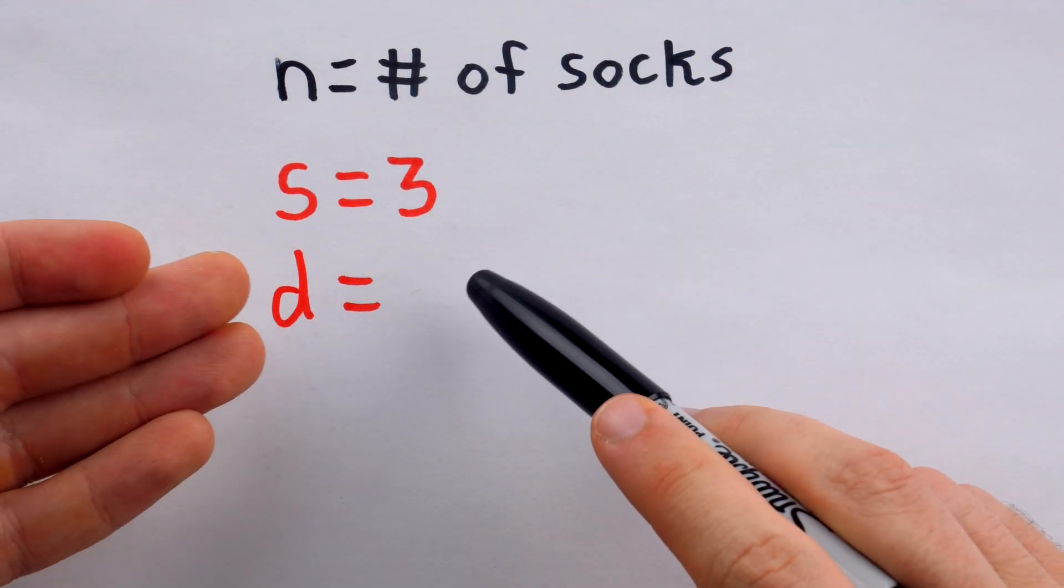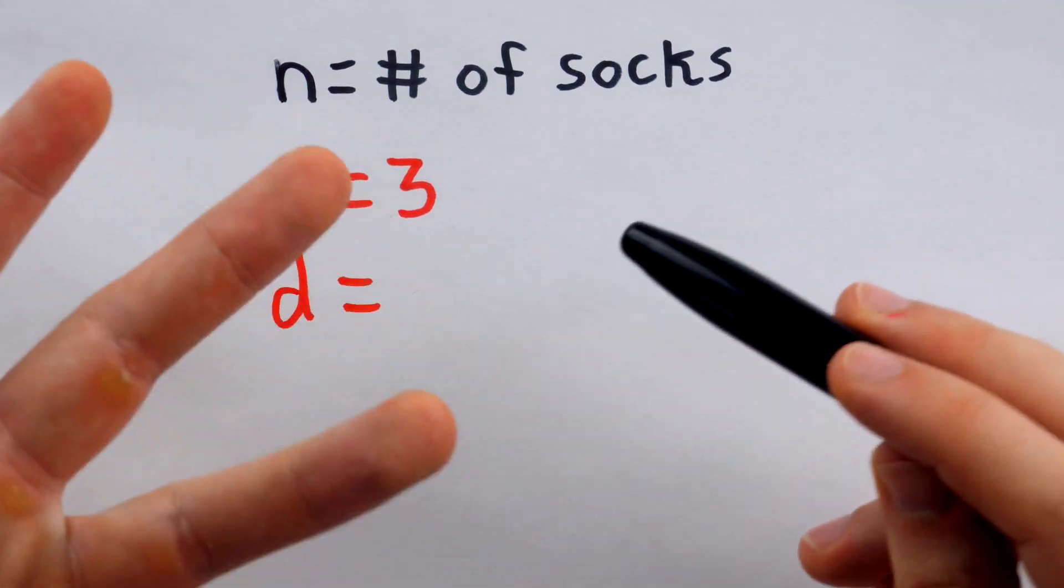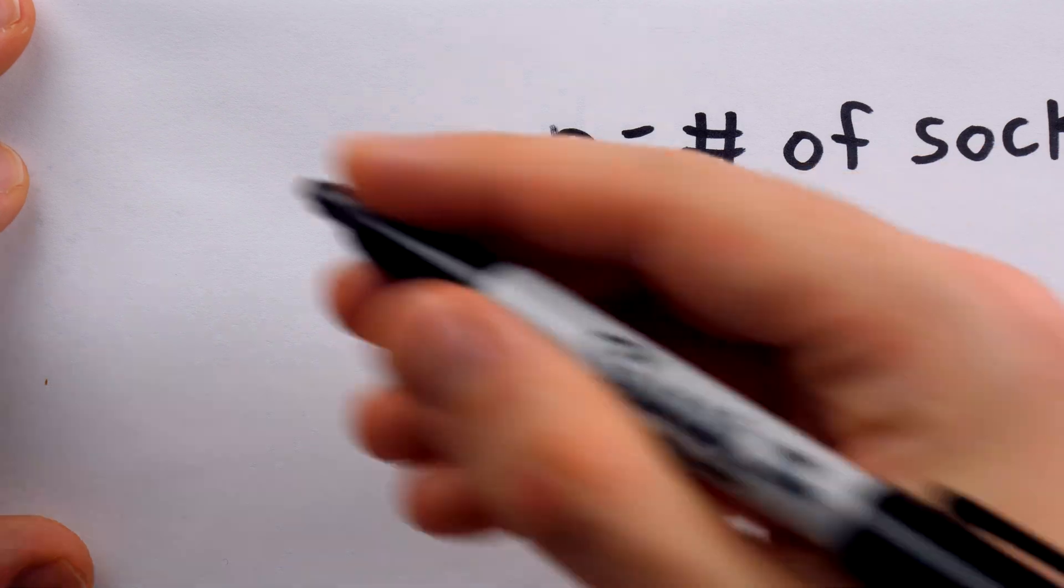Let's say that D is the minimum number of socks we must take to guarantee that we have a mixed pair. Now, we know that's three, but it's only going to be useful if we can tie it back to the number of socks in some way. So, let's get a little more specific.